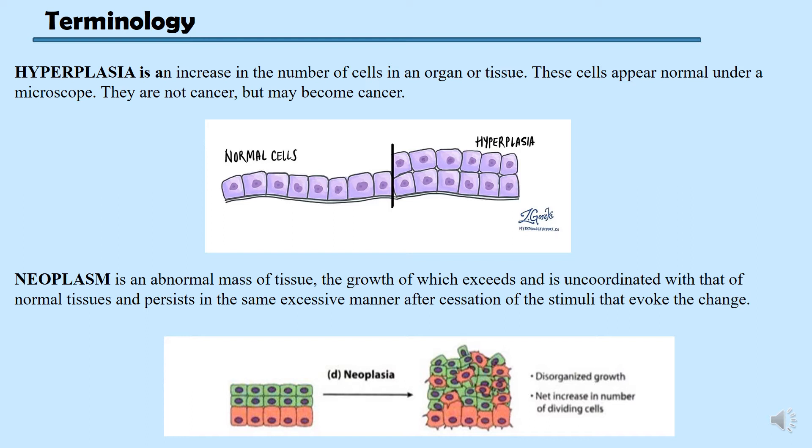If you have been following our past lectures, one place where we used the term hyperplasia was when discussing dysplastic features — specifically basilar hyperplasia. The basal cell layer is usually one layer in the epithelium; when there is a double layer, meaning an increase in number of cells, we call that hyperplasia — in that case basilar hyperplasia. If this same thing happens in any other organ or tissue, it would be called hyperplastic tissue.